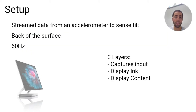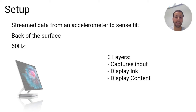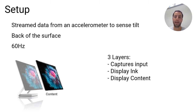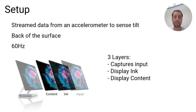To address this problem and explore a range of scenarios in the Surface Studio, we sense display postures and the continuous transitions between them with a tilt sensor plugin. We stream data from an accelerometer to sense tilt motion at the back of the surface. Our application is designed in three layers: the first to display content, the second to display ink, and the third to capture user input.